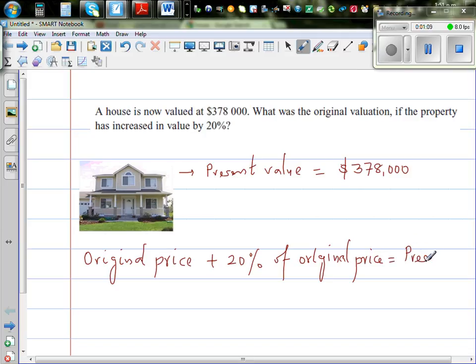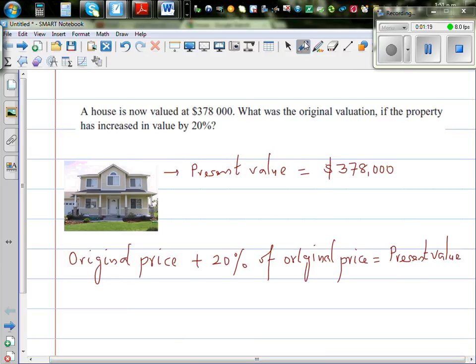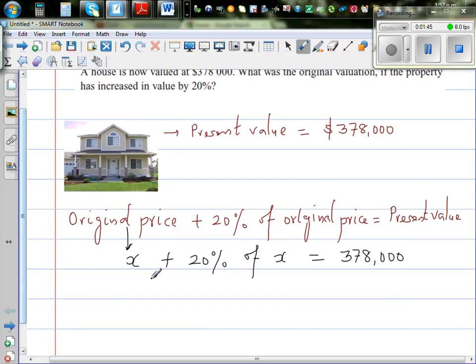So this is the whole example in the form of an equation. Let me scroll this to this side. We're going to let the original price be X, so it'll be X plus 20% of X is equal to 378,000.